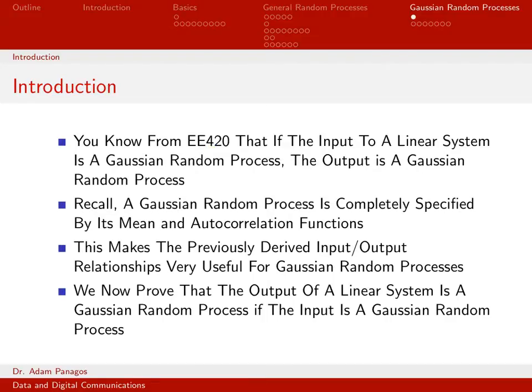The work we just completed in terms of figuring out the mean function and the autocorrelation function of the output random process is very useful for Gaussian random processes, because these are the only things you need to completely specify a Gaussian random process. Being able to compute the mean function and the autocorrelation function — since that's all you need for Gaussians — working with Gaussian random processes in linear systems is straightforward.